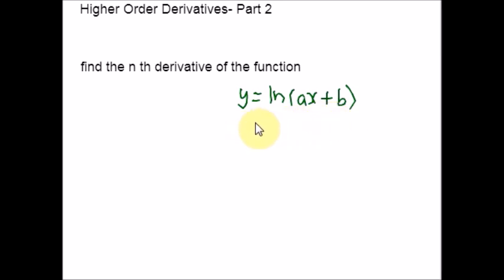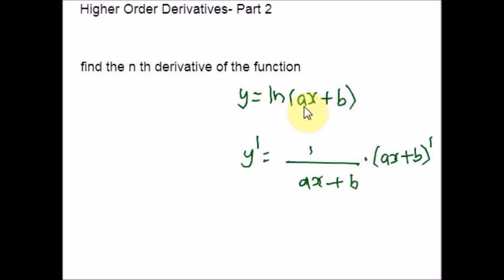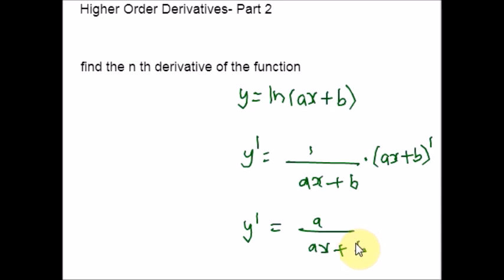Let us find the first derivative y'. y' is going to be 1/(ax + b). Since this is a function within a function, we use the chain rule and find the derivative of the inner function ax + b, which is just a. So simplified, y' = a/(ax + b). Now let us find the second derivative — that is going to be -1 times a² because shifting the denominator to the numerator gives a negative exponent.